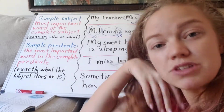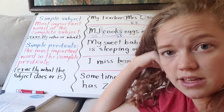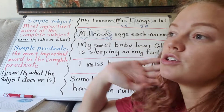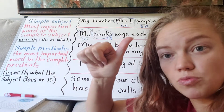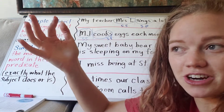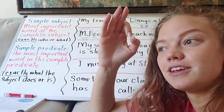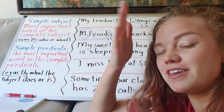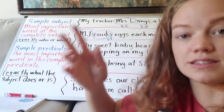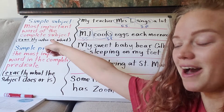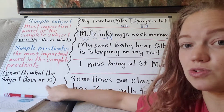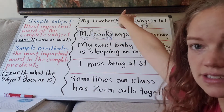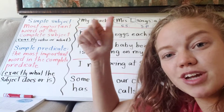Just like with the Mr. Morton song you watched last week, you can repeat the simple subject and predicate back together to check that it works. Mr. Morton walked down the street — Mr. Morton walked. Mr. Morton talked to his cat — Mr. Morton talked. You're putting the simple subject and simple predicate together to confirm this is the main who or what the sentence is about and exactly what they do or are. My teacher Mrs. L sings a lot — Mrs. L sings. MJ cooks eggs each morning — MJ cooks.